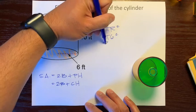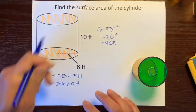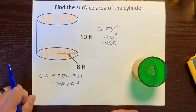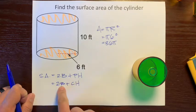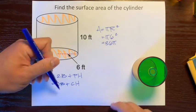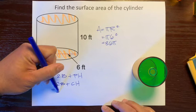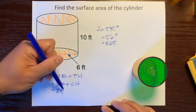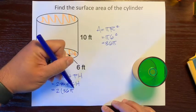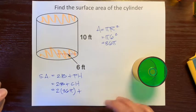Pi times 6 squared—6 squared is 36, and pi. Don't forget to write the pi there. We'll plug this into here. We have two bases, and the base area is 36 pi plus,